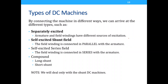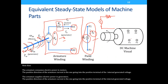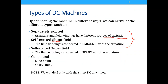There are four types of DC machines: separately excited, self-excited shunt, self-excited series, and compound. For this course, we only look at separately excited and self-excited shunt field DC machines. For separately excited, the armature and field windings have different sources — you power both separately using different DC sources. For self-excited shunt, the field winding is connected in parallel with the armature.